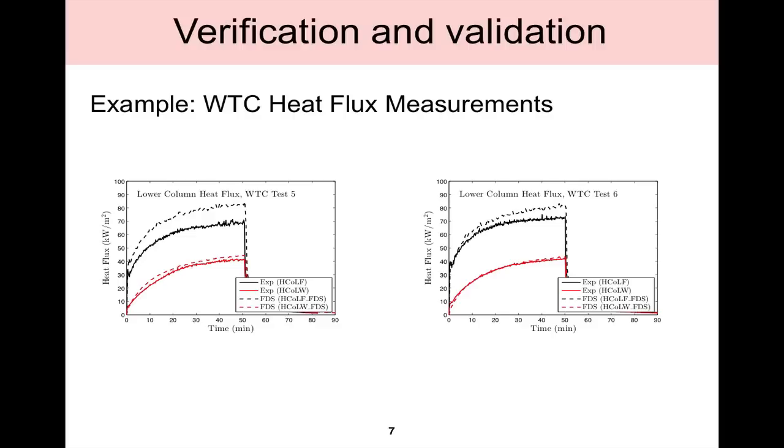Here's another case, another set of plots from the World Trade Center FDS simulations. This shows heat fluxes to the columns, and again the solid line here in the plots indicates the experimental data and the dashed line indicates the FDS simulation results. There are many different validation experiments in the validation guide and they're continuously being added. Work on this is continuous because validation is essentially an ongoing project to compare FDS to real world results.